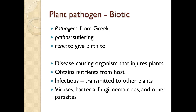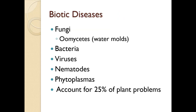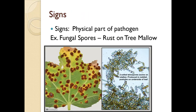Pathogens include viruses, bacteria, fungi, nematodes, and other parasites. Oomycetes, while closely associated with fungal diseases, are actually not true fungi. Biotic disease accounts for about 25 percent of plant problems, and about 85 percent of those are caused by fungi. So when you're out there looking at samples, if it's biotic, chances are it may be a fungus. Signs are the physical part of a pathogen.